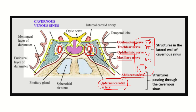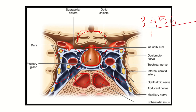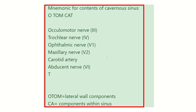In the second picture we can see the same structures in a different view. This is one cavernous sinus, this is the other cavernous sinus, and between the two is the pituitary gland. Just above the pituitary gland is the optic chiasma, and below it are the sphenoidal sinuses. The contents of the cavernous sinus are cranial nerves III, IV, V, and VI, plus the internal carotid artery.